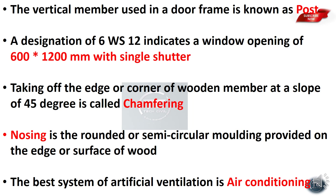A designation of 6WS indicates a window opening of 600x1200mm with a single shutter. In this system: 6 denotes 600mm, 12 denotes 1200mm, W denotes window opening, and S denotes single shutter. For a door, D is used instead of W.